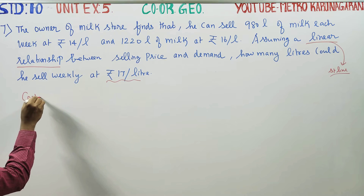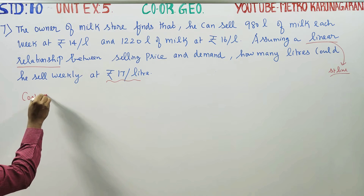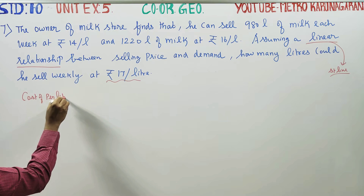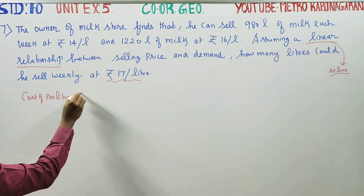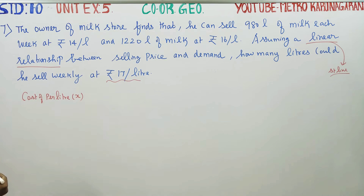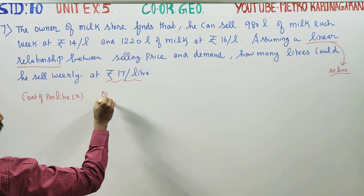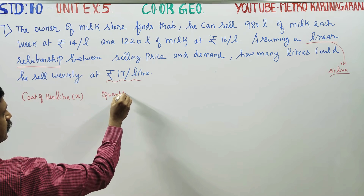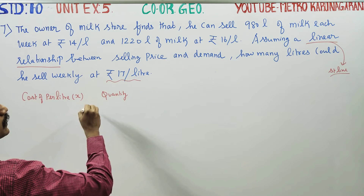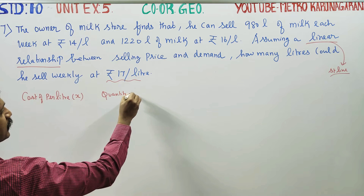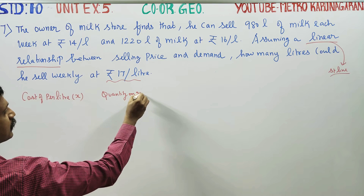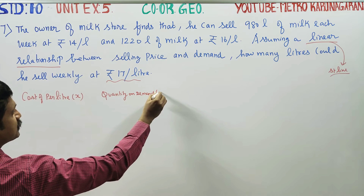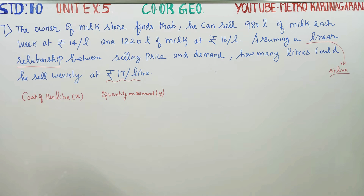Let x represent the cost per litre (price), and y represent the quantity on demand.